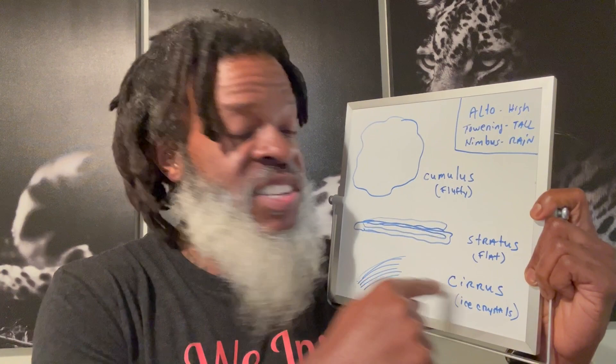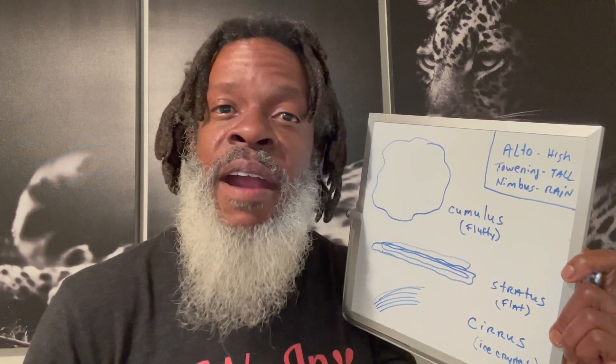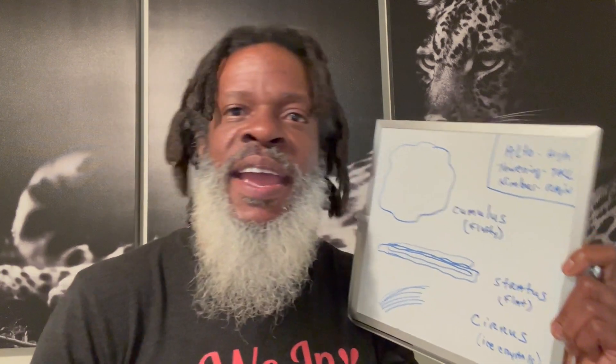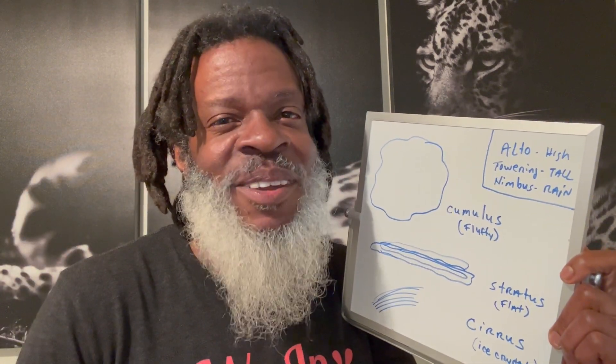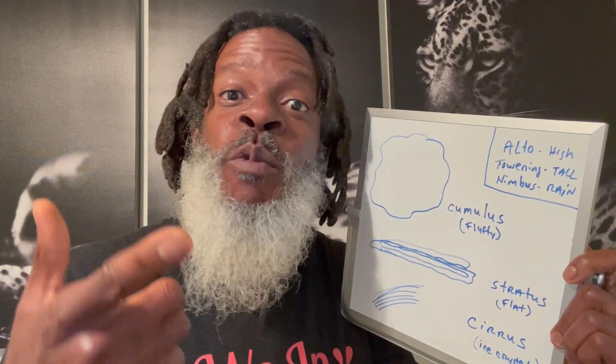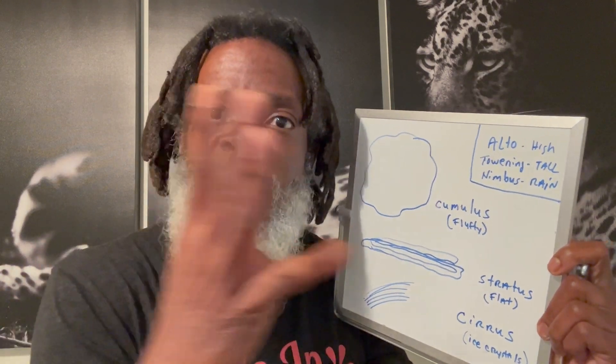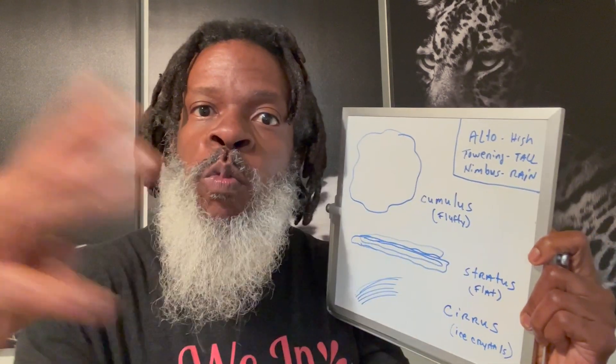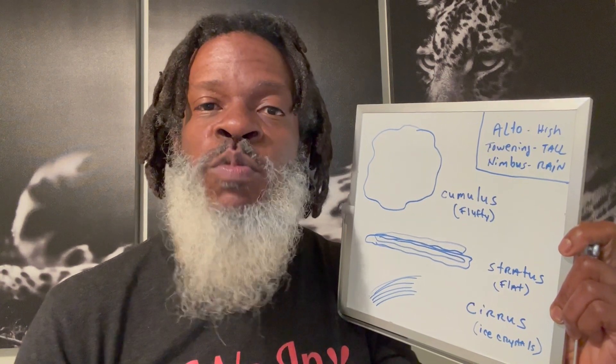And then number three, the cirrus cloud. This looks almost very wispy. Just think about when someone whisks their hair around — that wispy look, that's what a cirrus cloud looks like. That wispy, thin layer — almost like an ice crystal form kind of cloud. It forms up very high in the atmosphere.